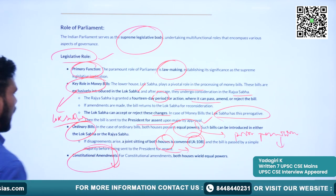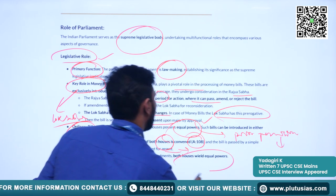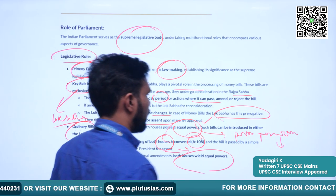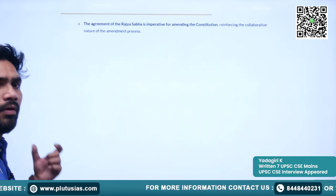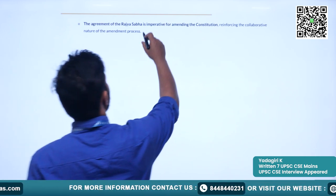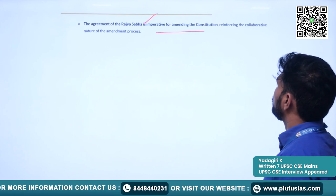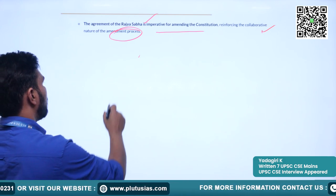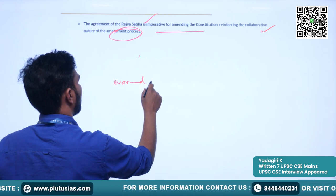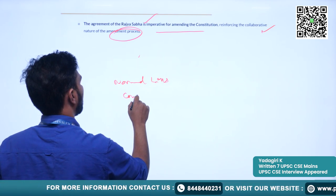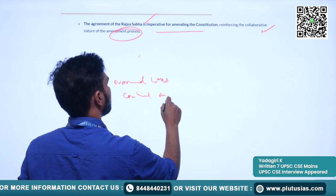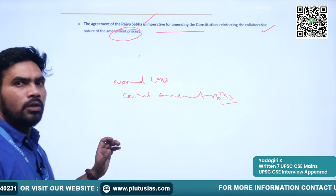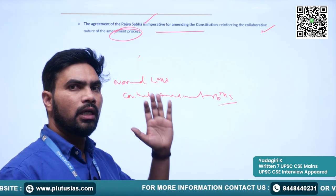When it comes to constitutional amendment bills, both houses have equal powers — both Rajya Sabha and Lok Sabha have equal powers. The agreement of Rajya Sabha is imperative for amending the constitution, reinforcing the collaborative nature of the amendment process. When it comes to ordinary and constitutional amendment bills, both houses have equal power. When it comes to money bills, the Lok Sabha has the upper hand.